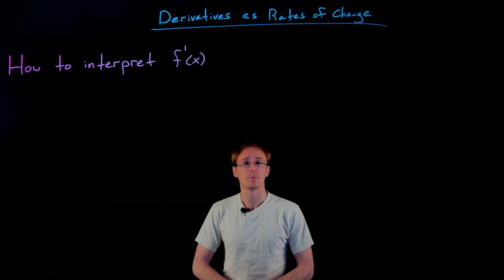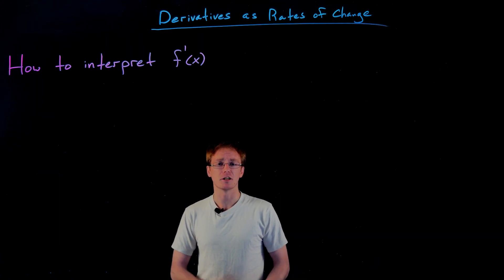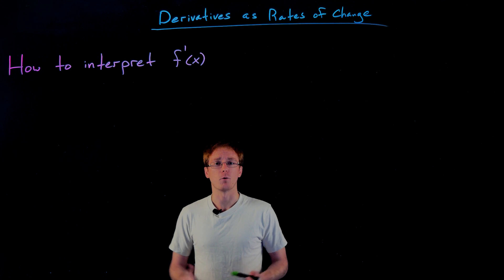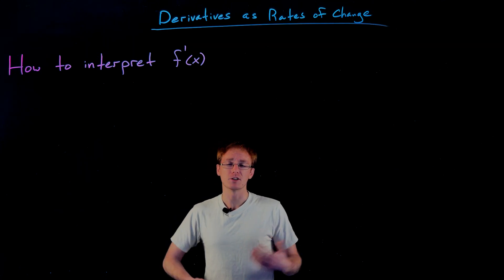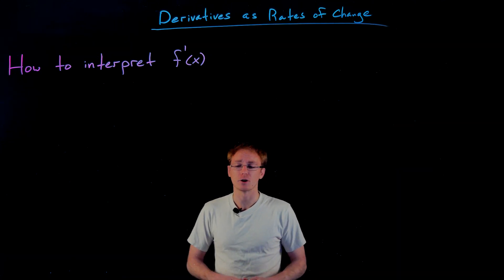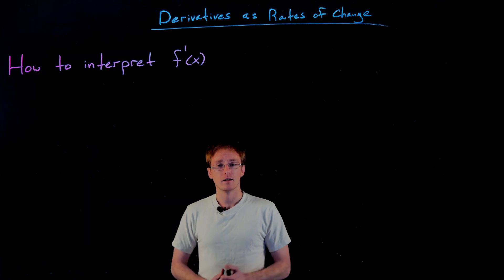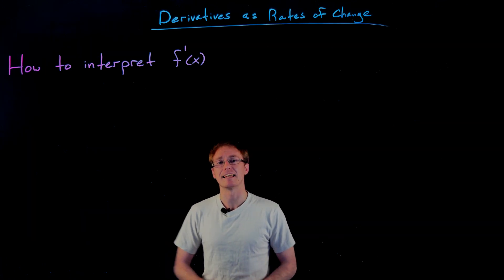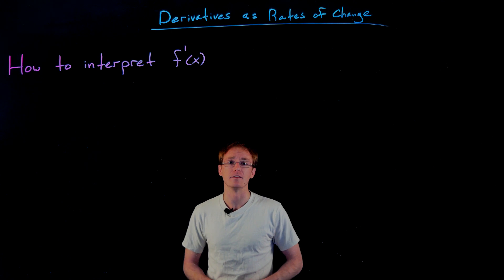In this video we're going to talk about derivatives as rates of change and how to interpret that quantity that is our derivative. We still have our interpretation that the derivative is the slope of the tangent line, but we're focusing more on that interpretation of the instantaneous rate of change of our function.